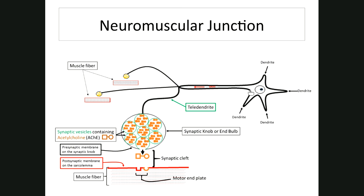Branching off the axon are structures called telodendrites — each small branch is one telodendrite. They terminate in synaptic knobs or end-bulbs, which are expanded ends of the telodendrites. The synaptic knob contains synaptic vesicles holding a neurotransmitter called acetylcholine — a molecule with two parts: acetyl and choline.